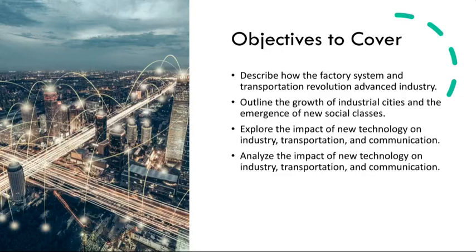We will also look at the impact of new technology on industry, transportation, and communication. Innovations like the spinning jenny, steam engine, and telegraph transformed industries, revolutionizing manufacturing and increasing efficiency and boosting productivity. The application of steam power in factories and transportation further propelled industrial growth, leading to the widespread use of mechanized labor. The development of the telegraph by Samuel Morse revolutionized communication, enabling near-instantaneous long-distance messaging. This advancement had a profound impact on trade, commerce, and the dissemination of information, shrinking the barriers of time and space.